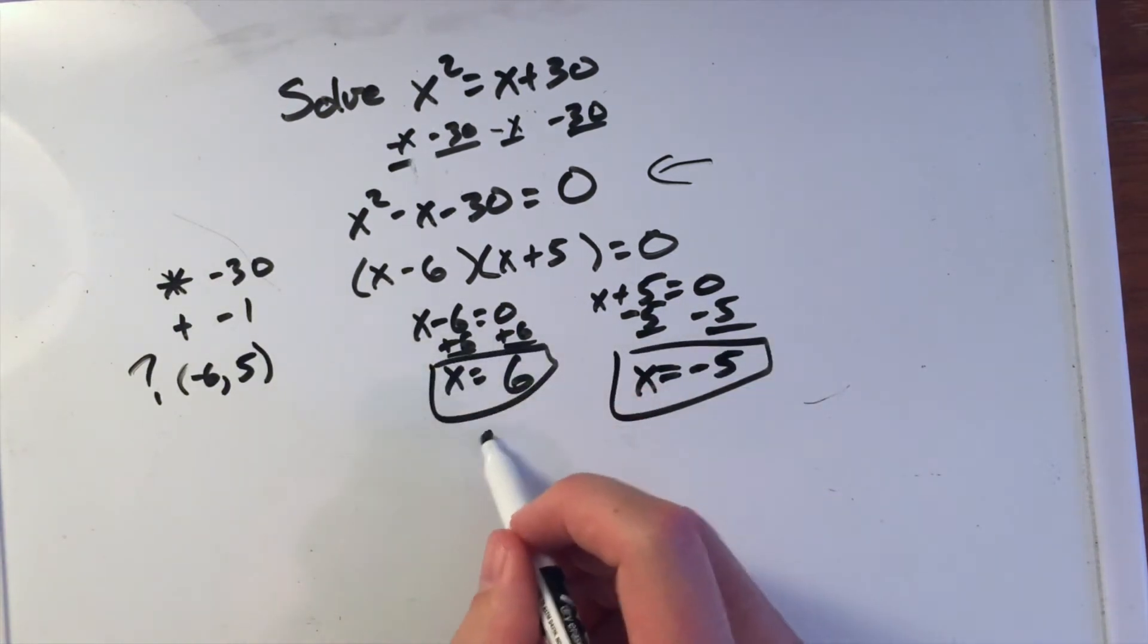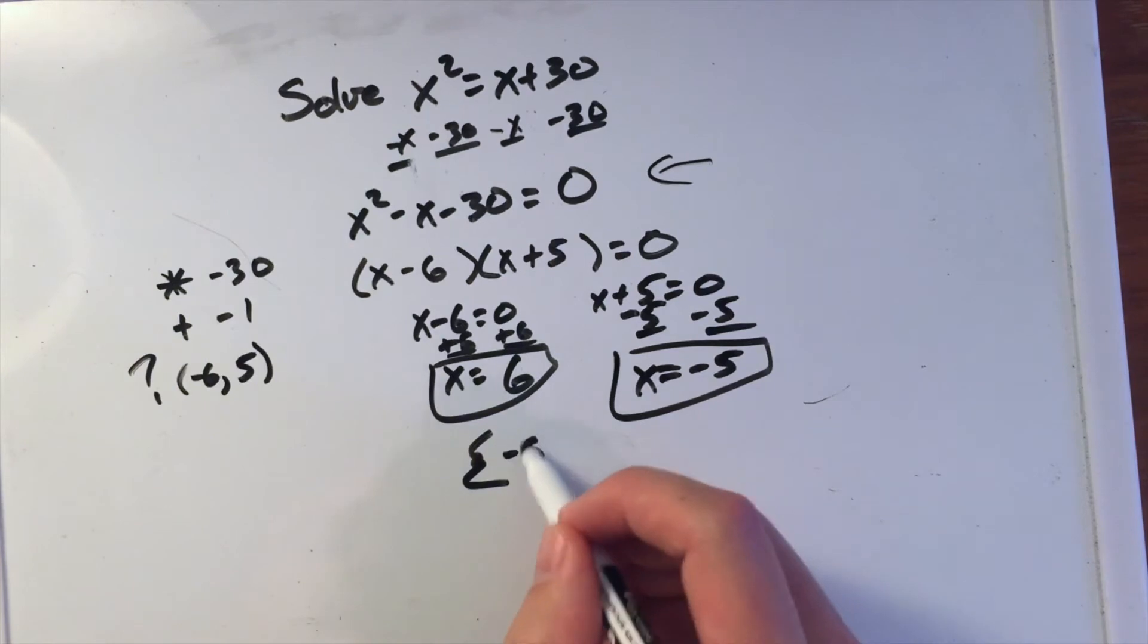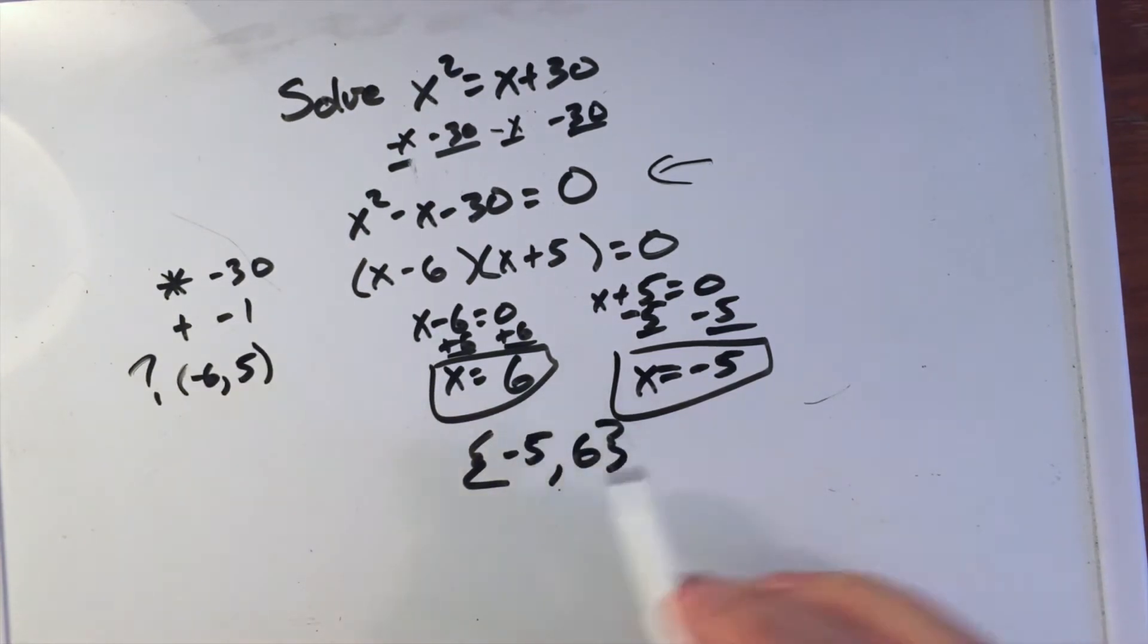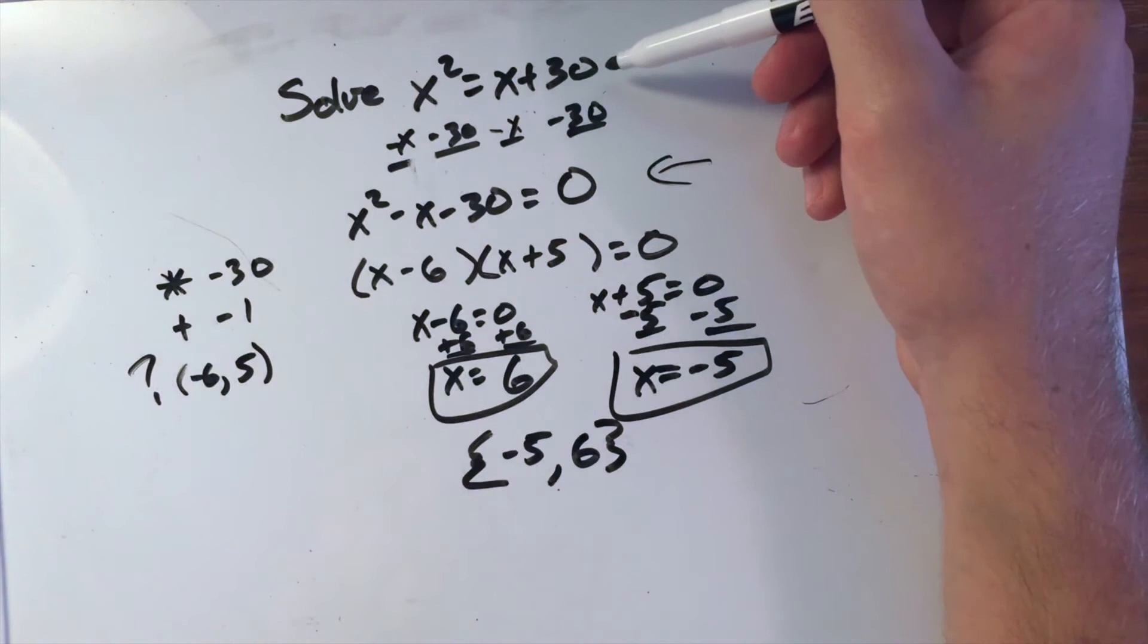Two answers. Sometimes we'll see it as a set of answers: negative 5 and 6. These are the two numbers that work for this solution.